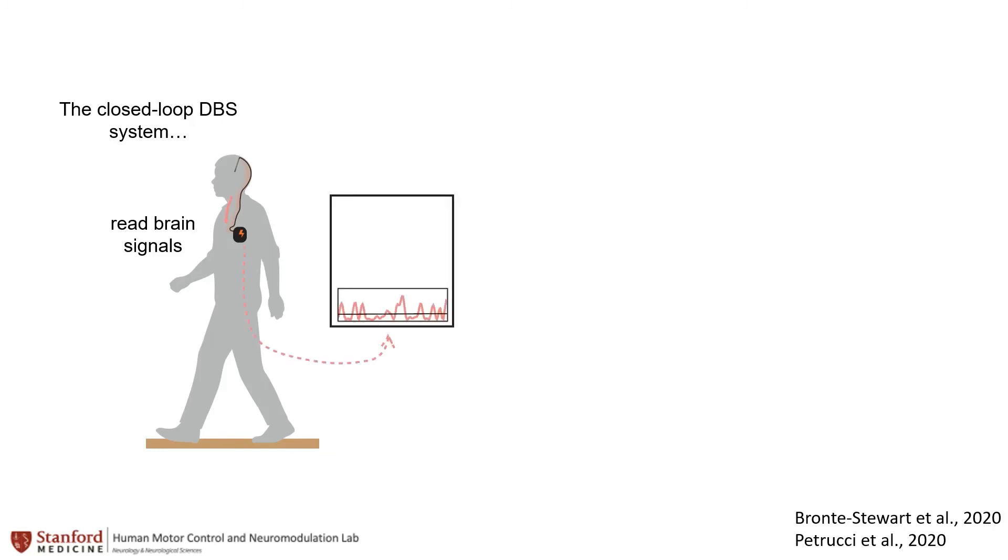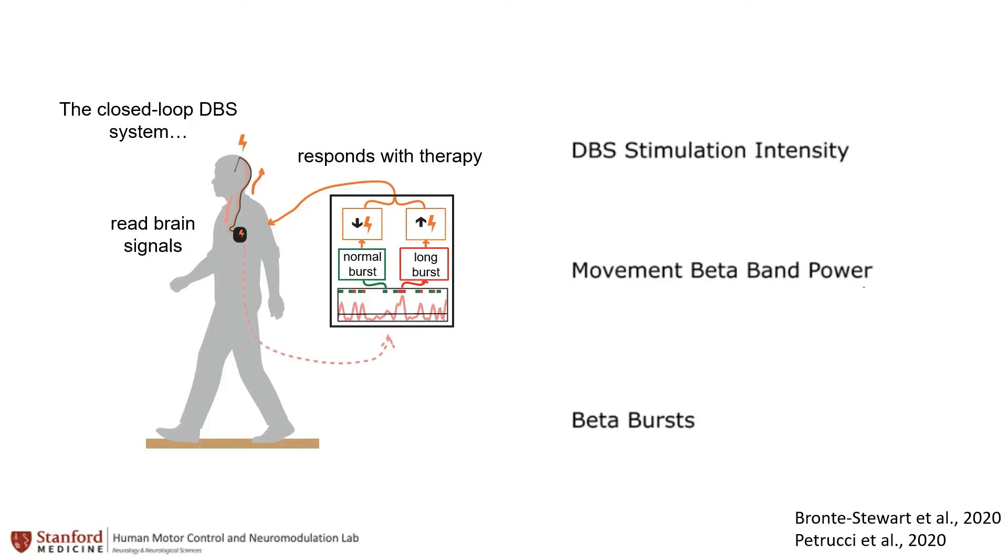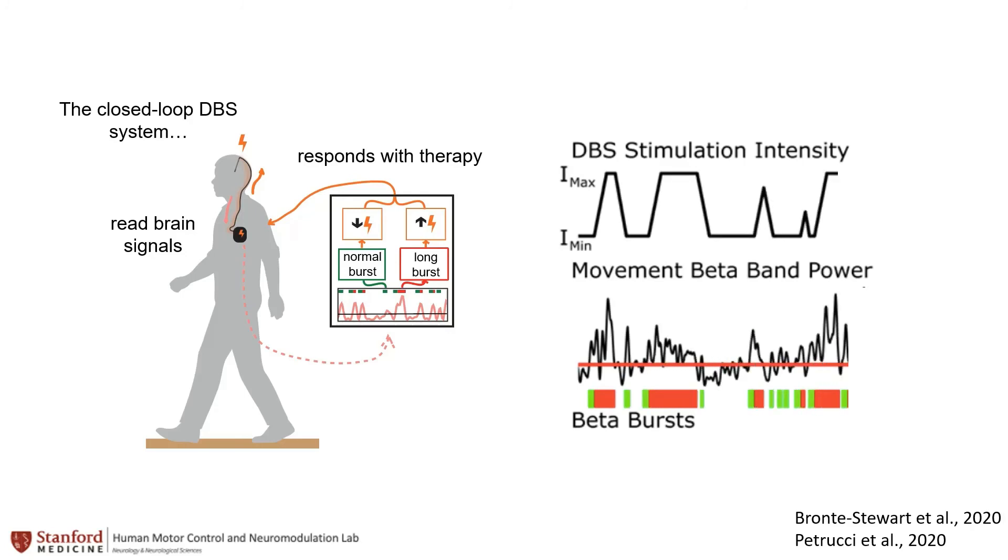The physiological relevance of beta burst durations during movement supports the feasibility of utilizing beta burst durations as a biomarker for a neural closed-loop DBS system in which stimulation intensity is modulated based on the beta burst dynamics. For instance, stimulation can be reduced during periods of short normal bursts or increased during prolonged pathological bursts.